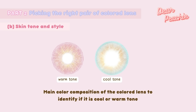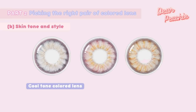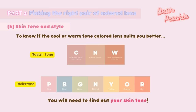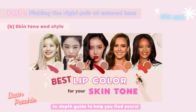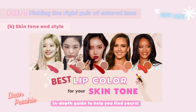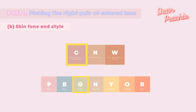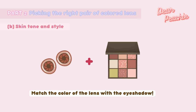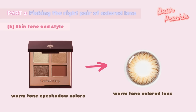For example, two lenses with a similar design pattern can differ — one may be cool tone and one warm tone. Selecting the warm or cool tone that best suits your style can level up your whole look. To know which suits you better, find out your own skin tone. Just like finding your best lipstick shade, warm tone skin looks great in warm tone colored lenses, and cool tone skin is better flattered by cool tone lenses. We have an in-depth guide to help you identify your skin tone.